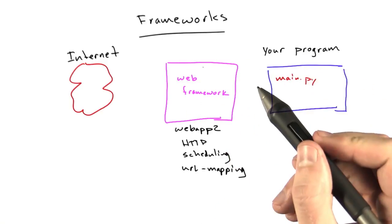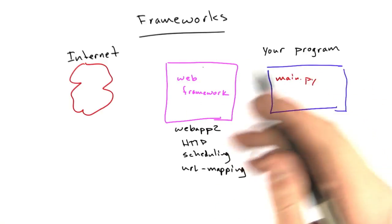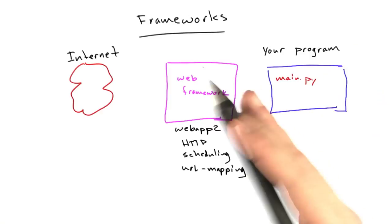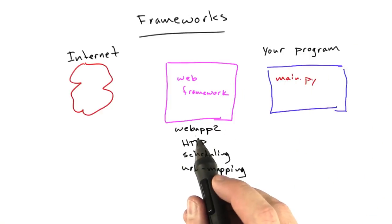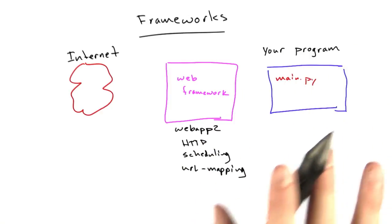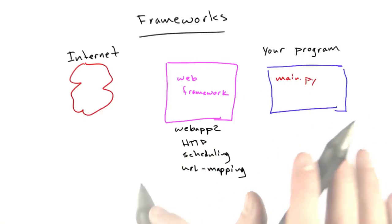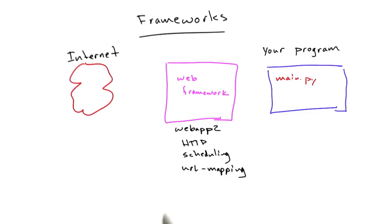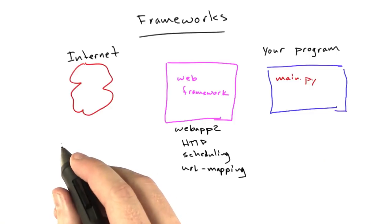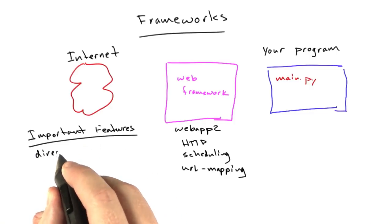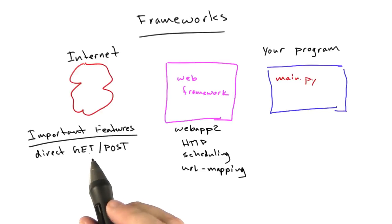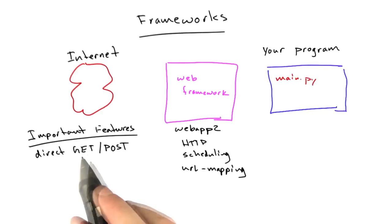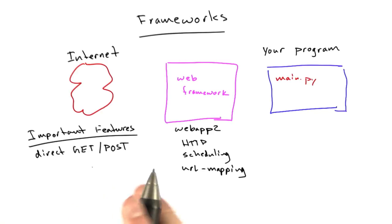There are various degrees of web framework that give you more or less control and require you to do more or less work. The level that we've been working on in Web App 2 is the level where I really like to be. The things that I really like about it are that we have direct access to GET and POST. Some frameworks kind of hide this from you, and I think it's really important that you are explicit about which method you're handling — a GET or a POST.